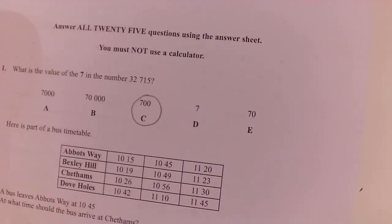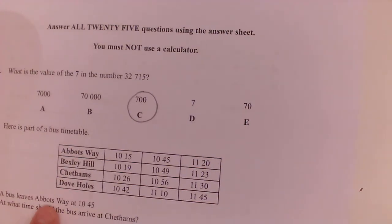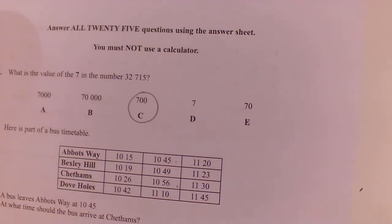Here is part of a bus timetable. A bus leaves Abbott's Way at 10:45. What time does it arrive at Cheltenham's? Well, it arrives at 10:56. So there's its route there.